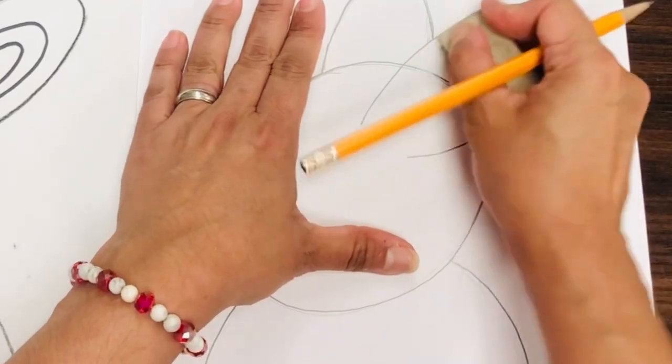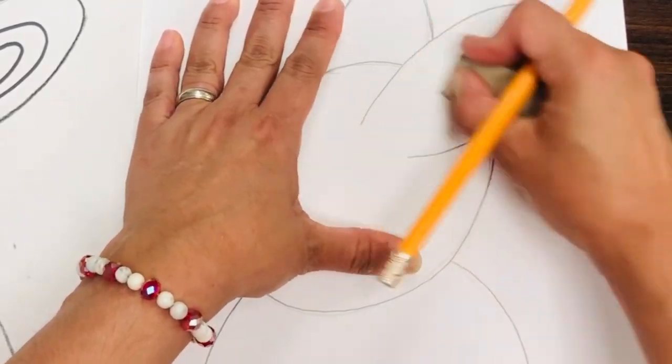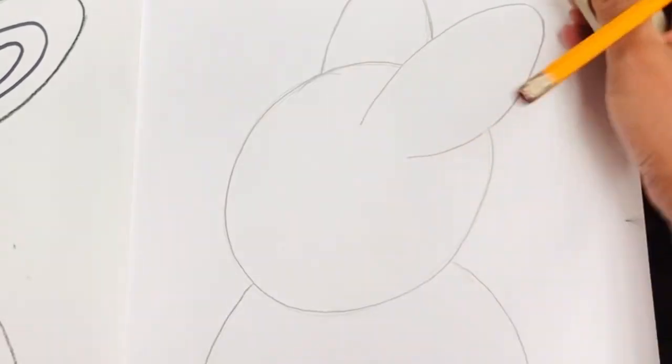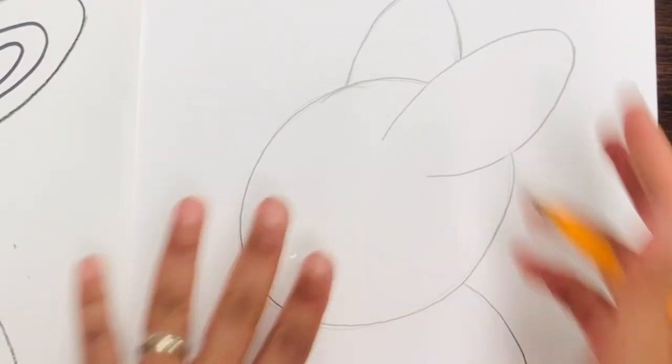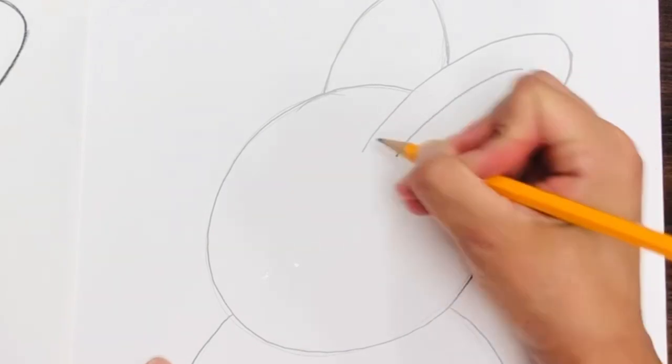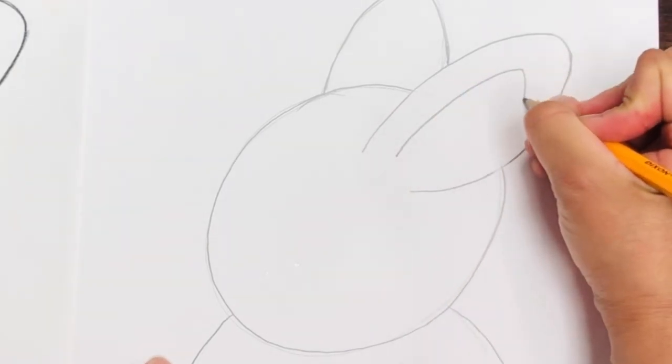I'm going to erase this line that I don't need to see anymore because this ear is overlapping, it's in front of that face shape. Now I'm going to make a smaller curvy line following this same shape inside.